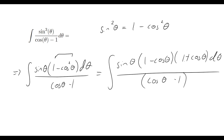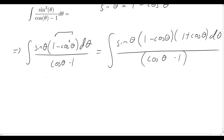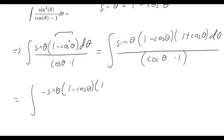Ideally we'd like to start cancelling some of these values. To do that, I need to multiply the top and bottom by a negative. When I do that, I can rewrite this as the integral of negative sine theta times 1 minus cos theta times 1 plus cos theta, and on the bottom, multiplying by minus changes cos theta minus 1 to simply 1 minus cos theta.